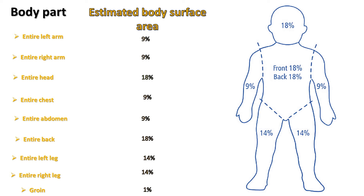Alternatively, an estimate can be made from the following for a child up to the age of 1 year: head and neck total (front and back) 18%, thorax and abdomen front 18%, thorax and abdomen back 18%, each upper limb total (front and back) 9%, and each lower limb total (front and back) 14%.